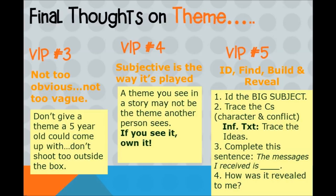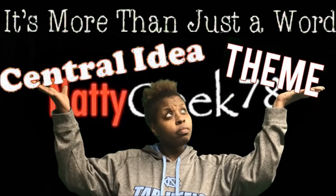The first thing you want to do is ID the big subject — what is the author discussing in their literary piece? Next, trace the C's: the character and the conflict. Or if you're working on an informational text, trace the main ideas. Then complete this sentence: 'The message I received from the story is blank.' And the last thing you want to do is reveal it — how was that theme revealed to you?